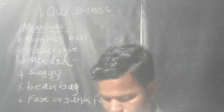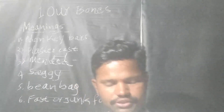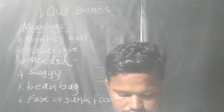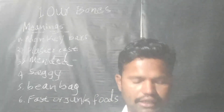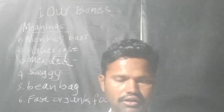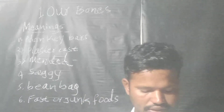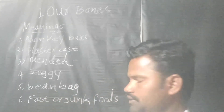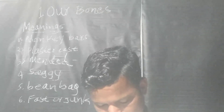The next word is 'saggy,' which means curving down easily under weight or pressure. Next is 'bean bag,' which means a cloth bag partly filled with dried beans, used in many games. And the last word is 'fast foods' or 'junk foods' — foods that are easily cooked and sold by restaurants to be eaten quickly. Such foods are not considered good for health.